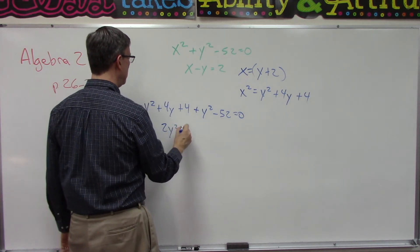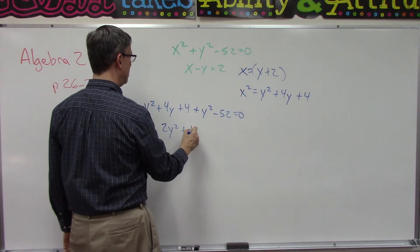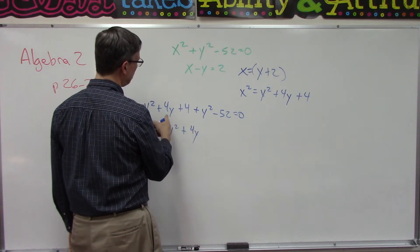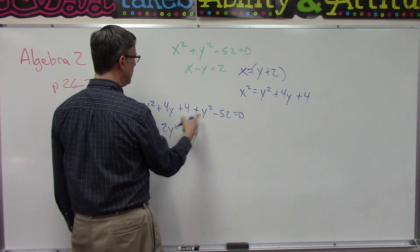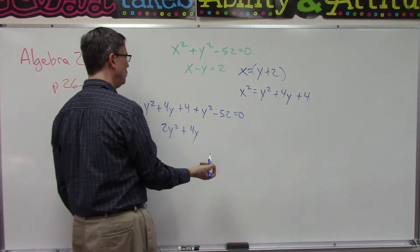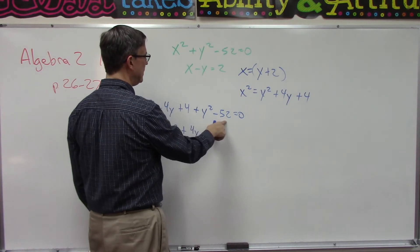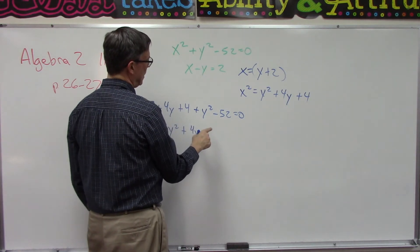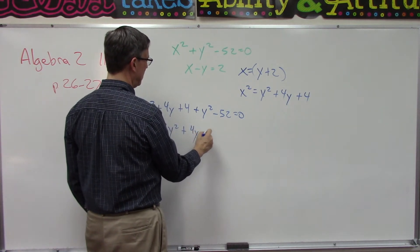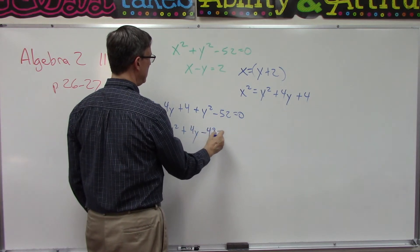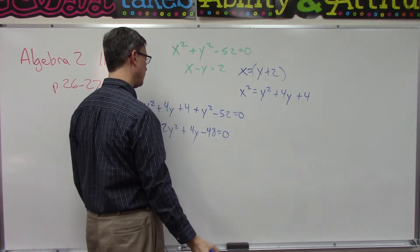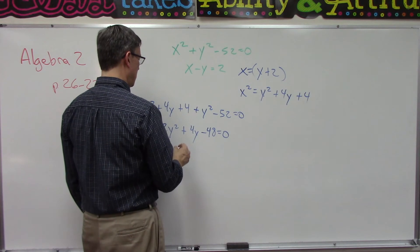Put the two y squared terms together, so two y squared plus four y. Then what's four plus negative 52? This four plus negative 52 is 48 minus... negative 48 equals zero.